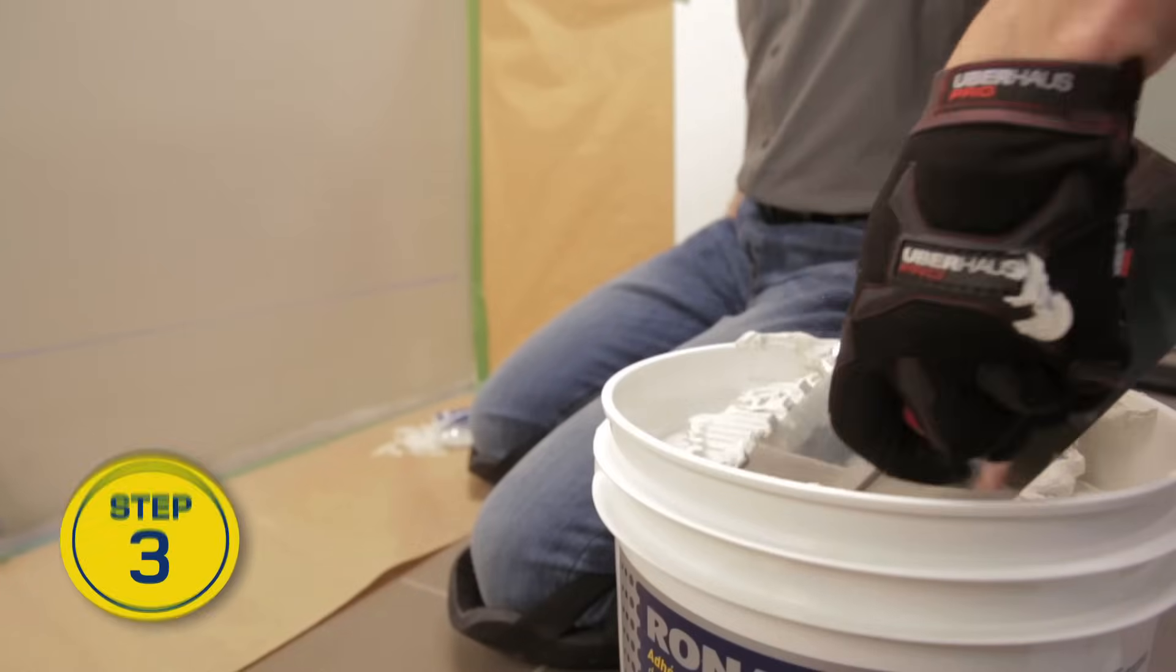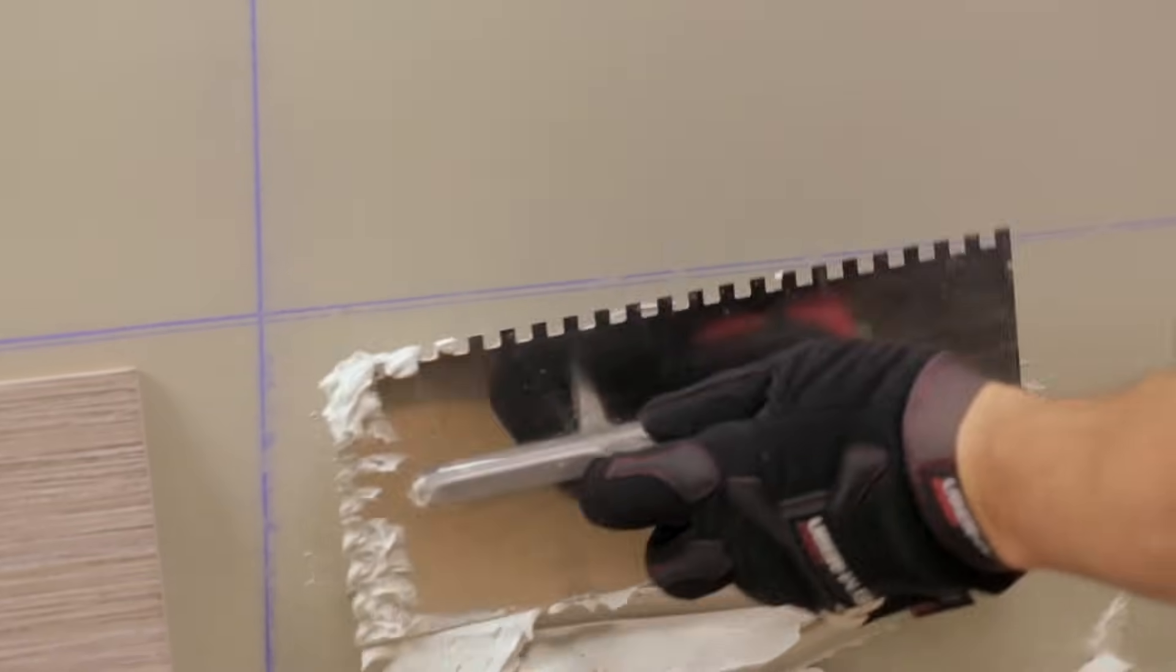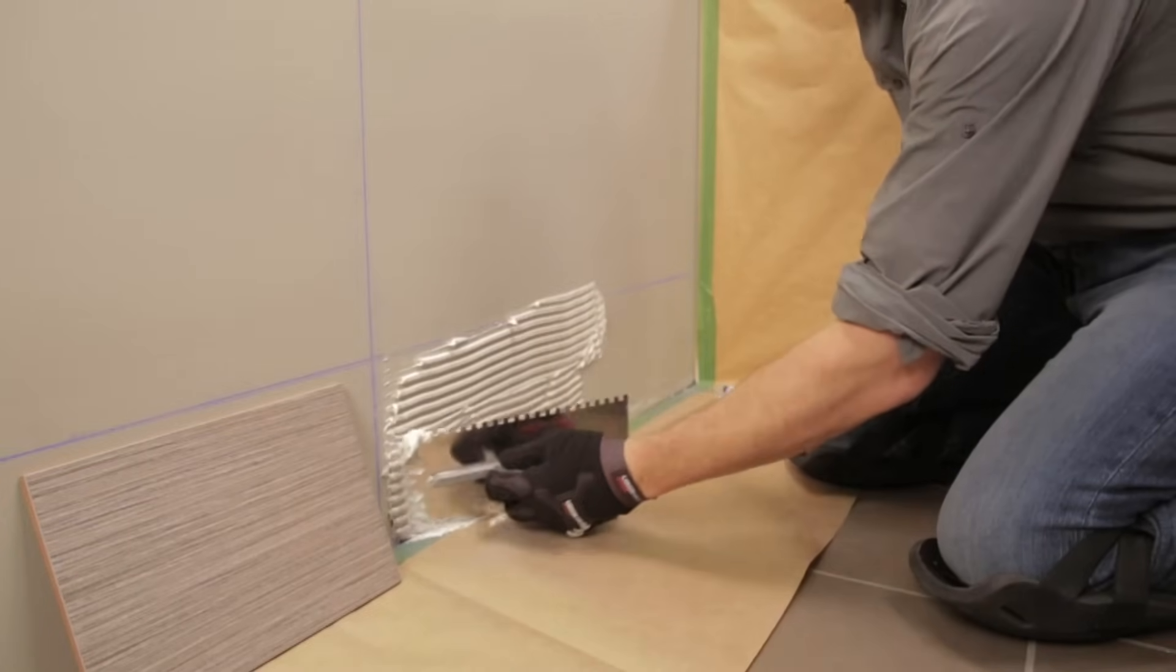With a notched trowel, spread the tile adhesive over a small section of wall to one side of the vertical center line. Hold the trowel at a 45-degree angle. Cover an area of 3 to 4 linear feet at a time.